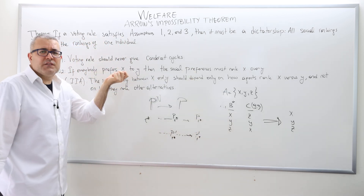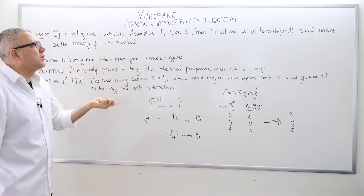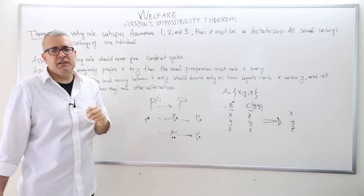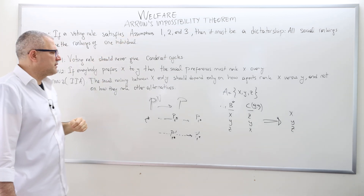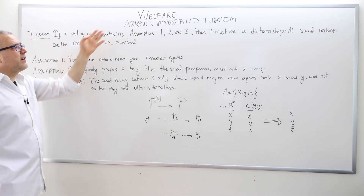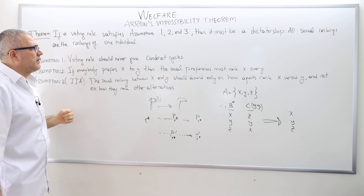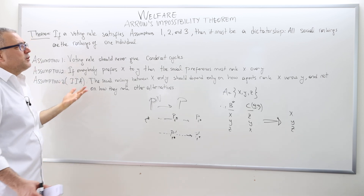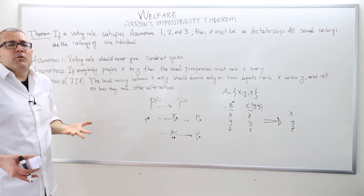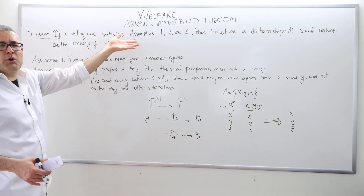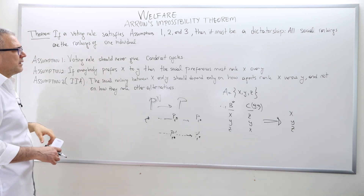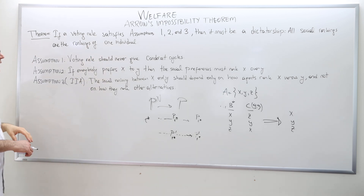Dictatorship is not a good rule, but it is the only rule which satisfies these three assumptions. For that reason, we call it the impossibility theorem — it's impossible to come up with a nice voting rule that has the nice properties those three assumptions highlight.